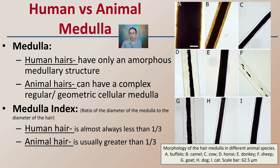Animal hair medullary index is often greater than one-half. We can see some examples here identifying them: the buffalo, camel, cow, horse, donkey, sheep, goat, dog, and cat. The scale bar shown here is 62.5 micrometers for comparison.